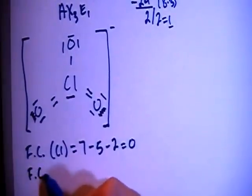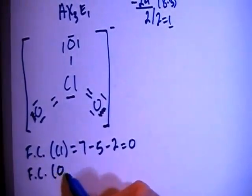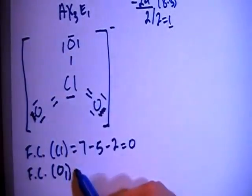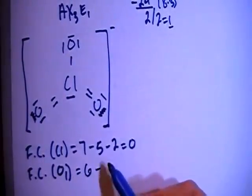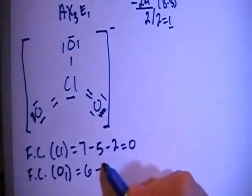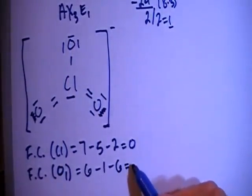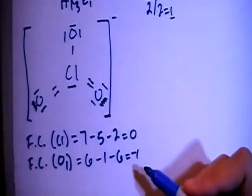So now we can do the formal charge on the oxygen with a single bond, so O sub 1. So that's this oxygen up top here. So that's 6 valence brought in minus 1 bond minus 1, 2, 3, 4, 5, 6 non-bonding electrons for a formal charge of negative 1.